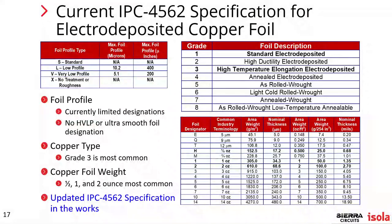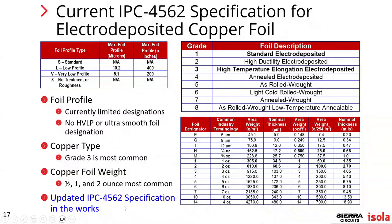Looking at the current foil specification, there are currently limited designations with no HVLP or ultra-smooth designation. Grade three is the most common foil currently used in high volume, low layer count applications. Half-ounce, one-ounce, and two-ounce are the most common. IPC is working on updating the specification — there have been conversations between foil suppliers and laminators. These updates are to the IPC 4045-62 specification, which covers the different types of descriptions for copper foils.